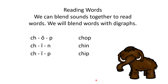Now we're going to practice reading words. We can blend sounds together to read words. We will blend words with digraphs. Watch as I do this one: ch — ah — p — chop. See how I'm reading the sounds and then blending them together to make a word. Practice with me: ch — i — n — chin. Now you do it. Chin. Nice job! Do it with me: ch — i — p — chip. Now you do it.